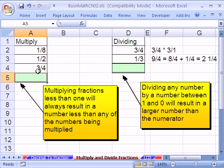It's very easy in Excel. You just do multiplying or dividing. But I want you to notice a pattern that will always occur. Any time you're multiplying fractions, multiplying fractions less than 1 will always result in a number less than any of the numbers being multiplied.